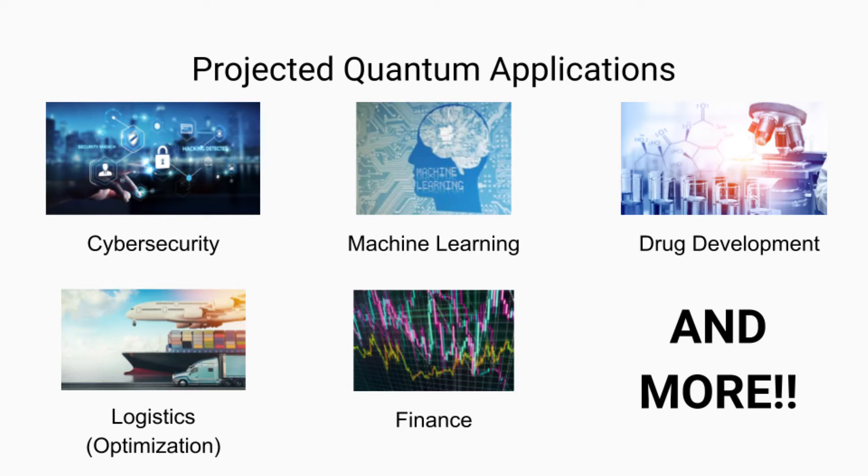Second, we have machine learning. Quantum computers, because they're exponentially faster than classical computers, they allow machine learning to experience massive improvements.